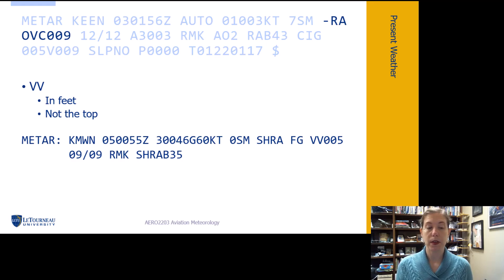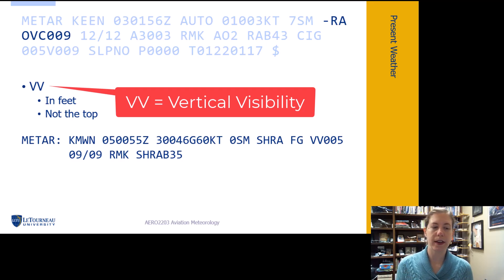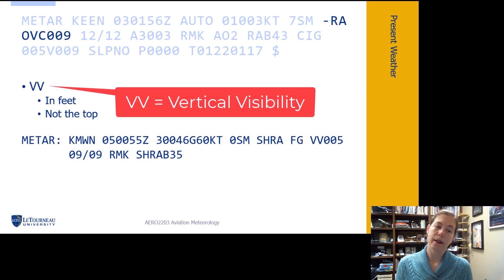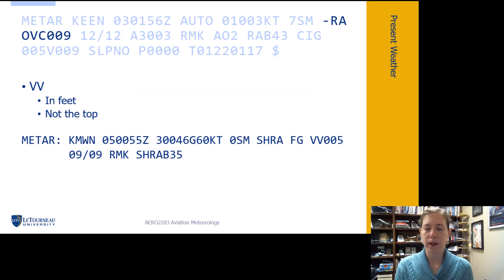Let's talk about VV. Vertical visibility means we have an indefinite ceiling. What we mean by an indefinite ceiling: it is vertical visibility going upward into a surface-based obscuration. I'll show you a picture of this in a moment.